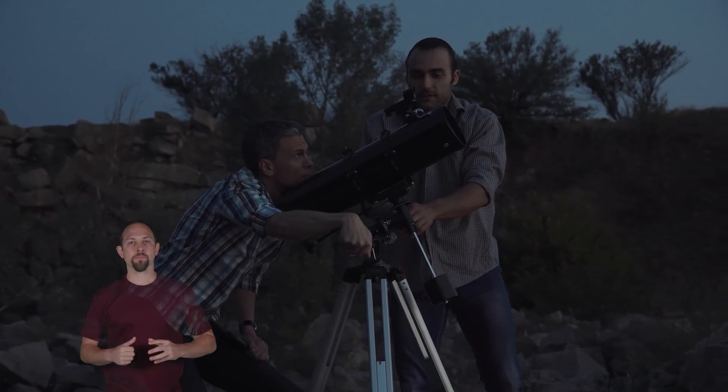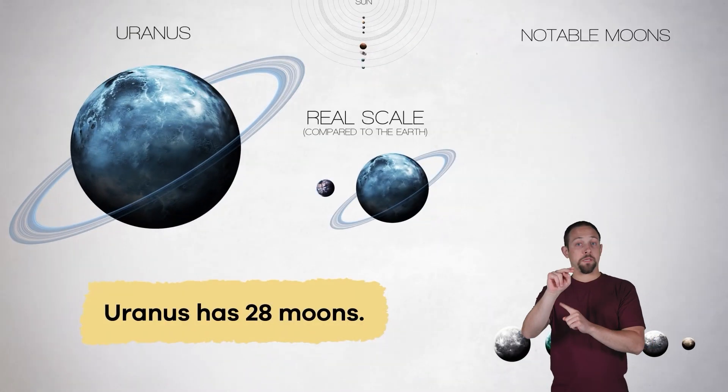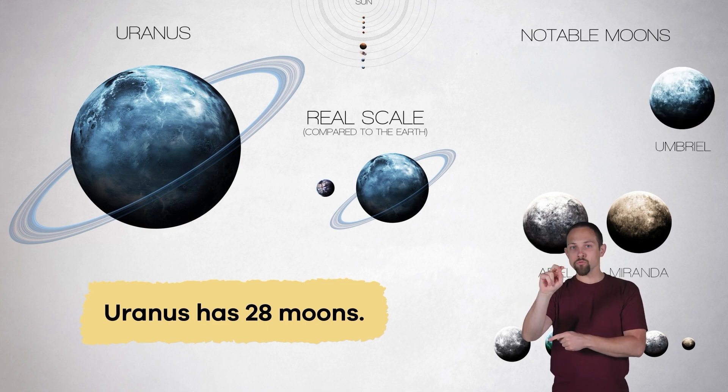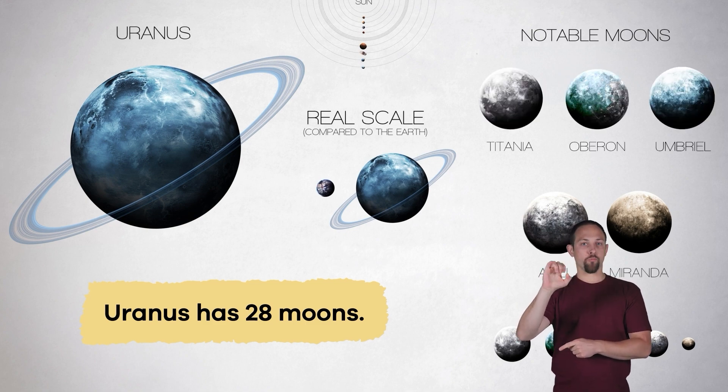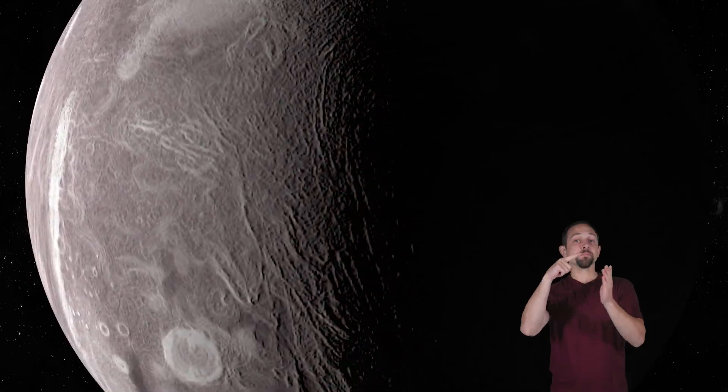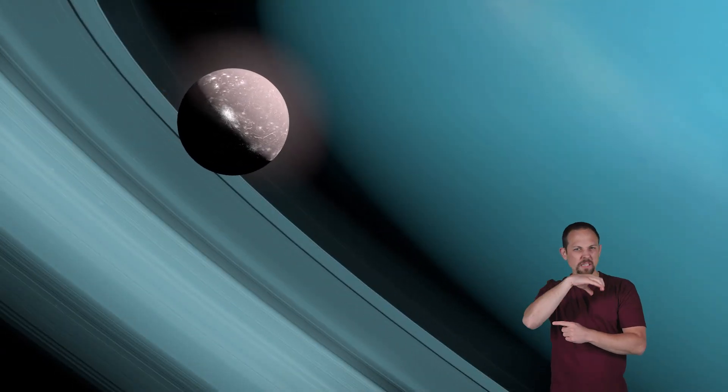According to NASA, Uranus has 28 moons, including Miranda, Ariel, Umbriel, Titania, and Oberon. Each moon is unique in both shape and landscape. For instance, Miranda has strange cliffs and valleys, and Ariel is covered in icy plains and bright white craters.